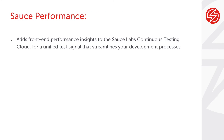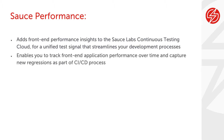Source Performance gives your team insights into the front-end performance of your application and gives you access to that information in the same platform you are already using for testing. This gives your team a single unified test signal and a more efficient process. Source Performance is a tool that enables customers to track front-end application performance over time and capture new regressions as part of a CI/CD process.